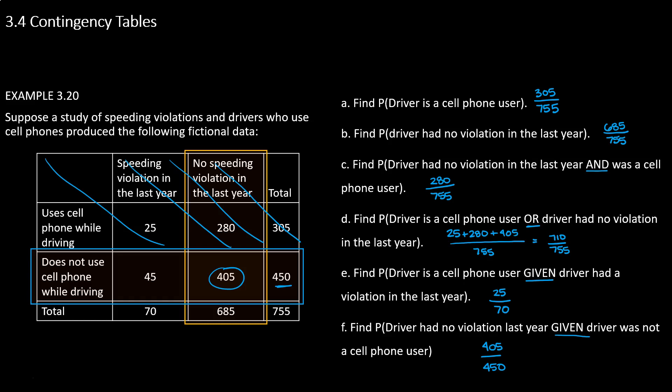With conditional probabilities, contingency tables are very helpful because they let us reduce the sample space to just the group that fits the given information. We've shrunk the sample size — we're not looking at all 755 participants because we know we're talking about a driver who is not a cell phone user. That's the given information.